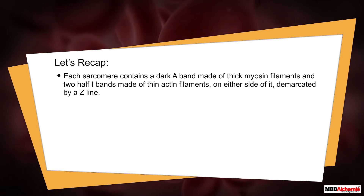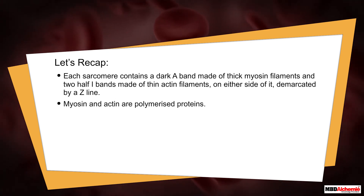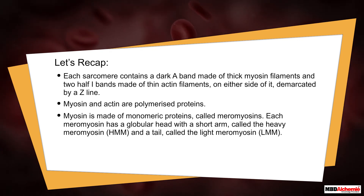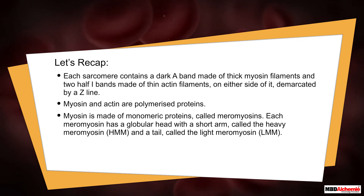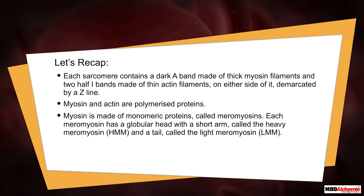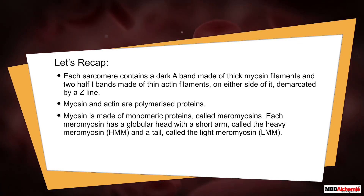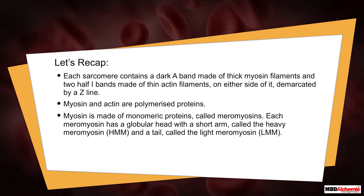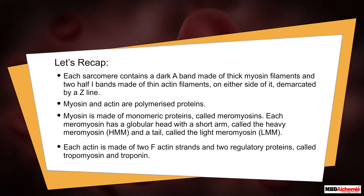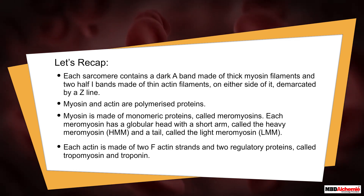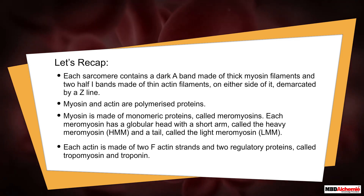Myosin and actin are polymerized proteins. Myosin is made of monomeric proteins called meromyosins. Each meromyosin has a globular head with a short arm called the heavy meromyosin (HMM) and a tail called the light meromyosin (LMM). Each actin filament is made of two F-actin strands along with two regulatory proteins called tropomyosin and troponin.